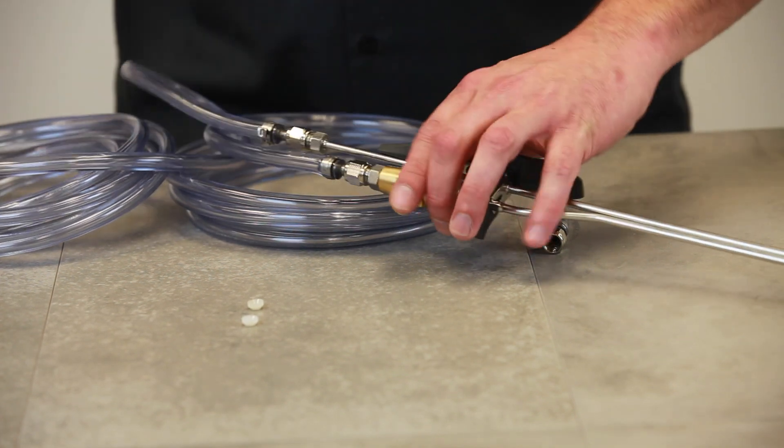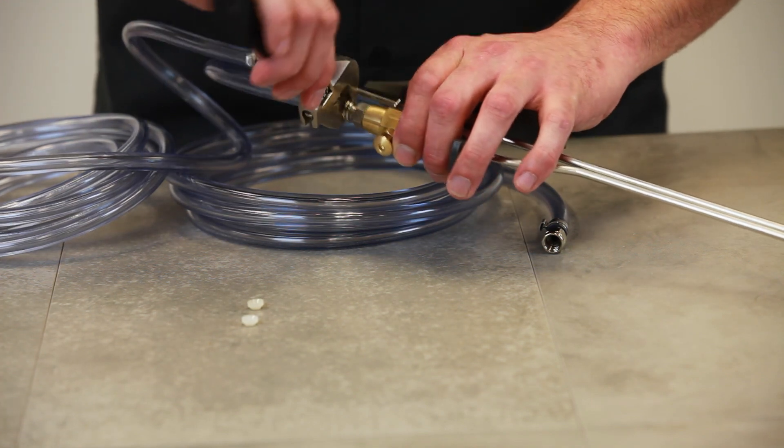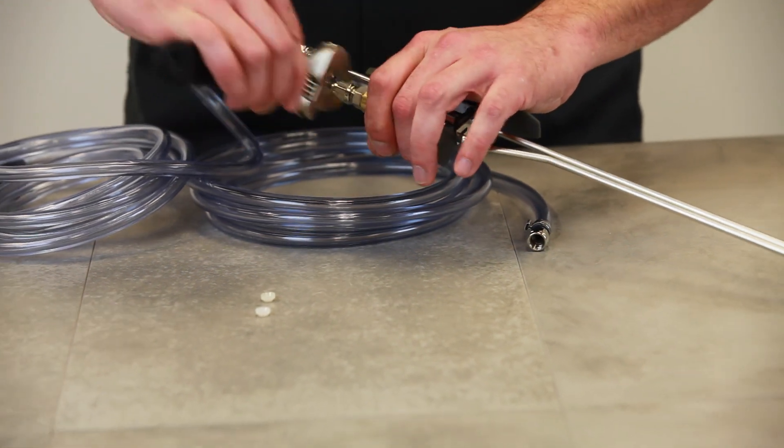Once we have these finger tight, gently snug them tight with a wrench. Don't over tighten it or you can damage your Laststraw filler.